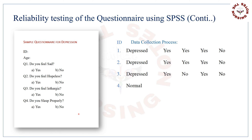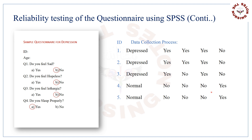Now imagine you are collecting data from a normal respondent who is not depressed; then the expected answers may be like this. Question 1: Do you feel sad? If the patient is normal, there are increased chances the reply will be no. Question 2: Do you feel hopeless? Normal will reply no. Question 3: Do you feel lethargic? Also no. Question 4: Do you sleep properly? The respondent is normal, so there are increased chances that the reply may be yes. Other normal respondents will likely reply in the same manner, but there is also a chance of little variation.